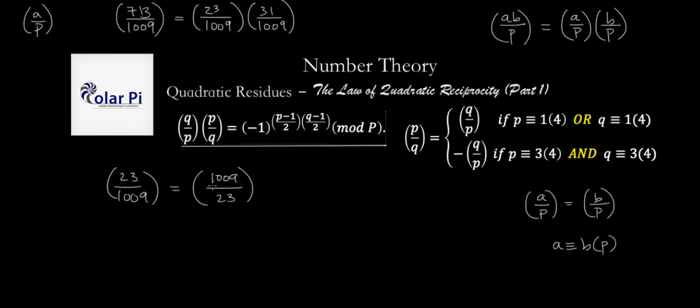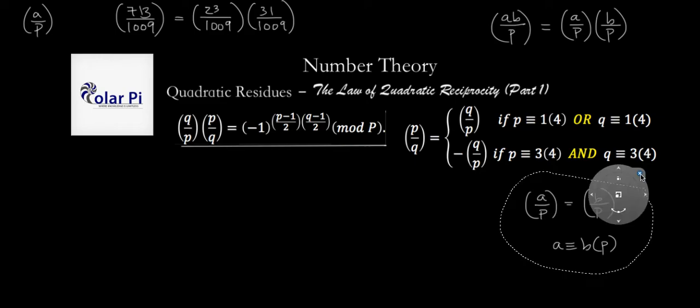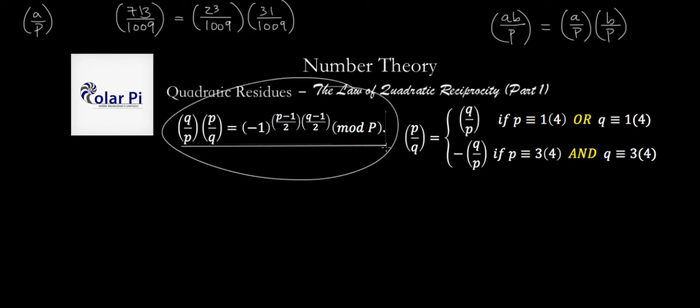Now another of the properties of the Legendre symbol that we talked about is the fact that a over p will equal b over p whenever a is congruent to b mod p. So what can we do here? Well, we can reduce 1009 mod 23 and write that what we have here is the same as 20 over 23. And then we can move forward from here and figure out what this is, and we can similarly figure out what this is and multiply them together to figure out what this is.